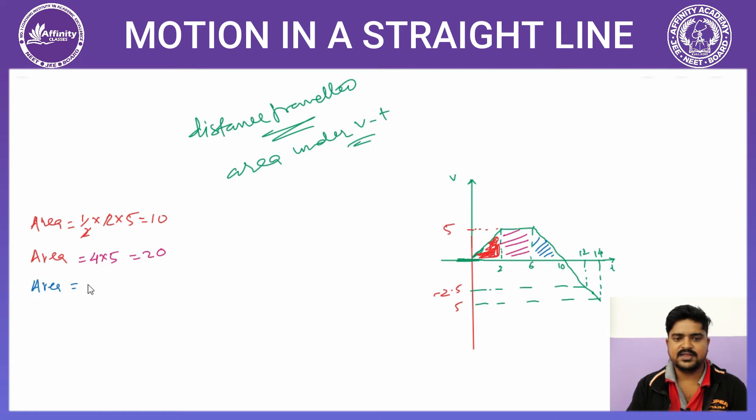अगले triangle का area = 1/2 × 4 × 5 = 10 होगा।